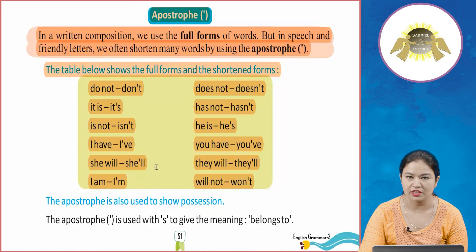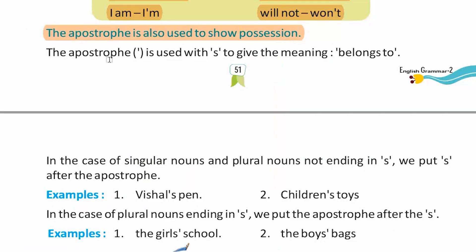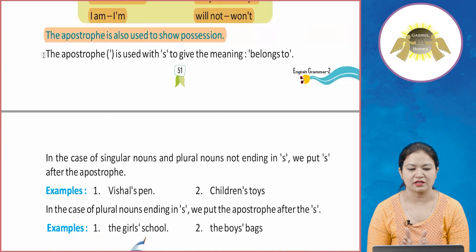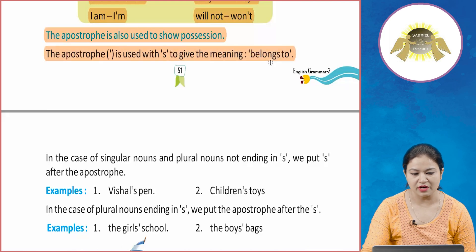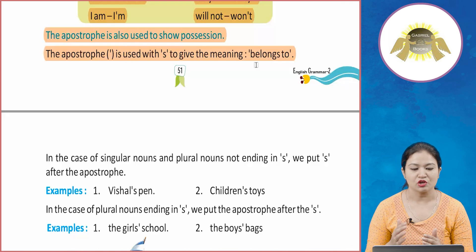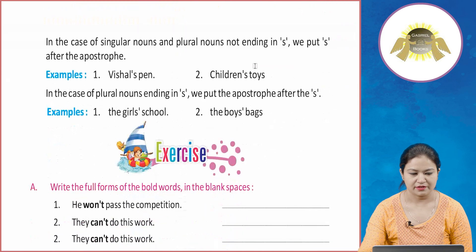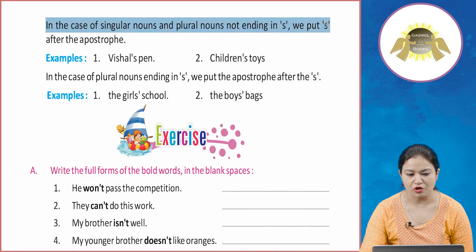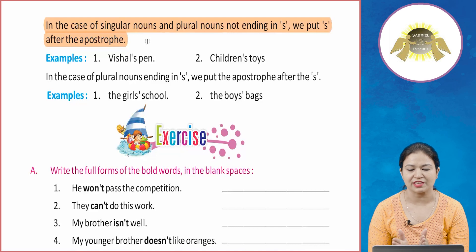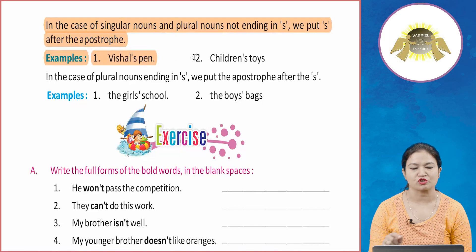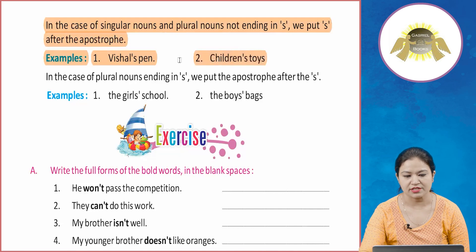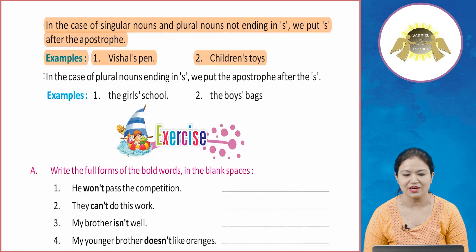The apostrophe is also used to show possession — meaning something belongs to someone. We use apostrophe with 's' to give the meaning 'belongs to'. In the case of singular nouns and plural nouns not ending in 's', we put 's' after the apostrophe. For example, 'Vishal's pen' shows the pen belongs to Vishal. 'Children's toys' shows the toys belong to the children.